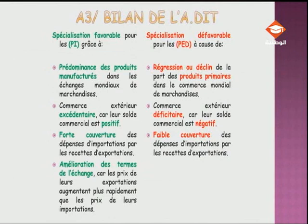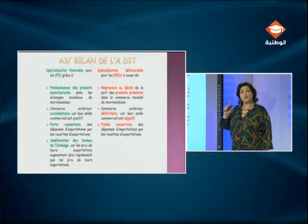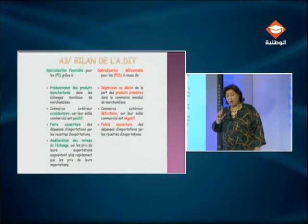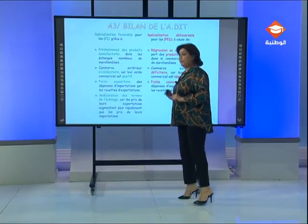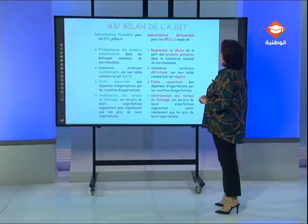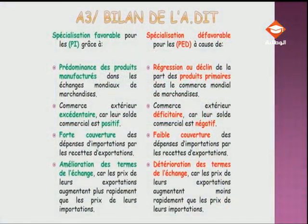En se référant aux indicateurs, on peut expliquer la situation favorable des PI grâce à l'amélioration de leurs termes de l'échange. Quand les prix des produits exportés augmentent plus rapidement que les prix des produits importés, l'ITE — indice des termes de l'échange — est supérieur à 100. Attention : c'est un indice, pas un taux, donc ce n'est pas un pourcentage. Pour la situation défavorable des PED, elle s'explique par le fait qu'ils souffrent d'une détérioration de leurs termes de l'échange : leur ITE est inférieur à 100, parce que les prix de leurs exportations augmentent moins rapidement que les prix de leurs importations.